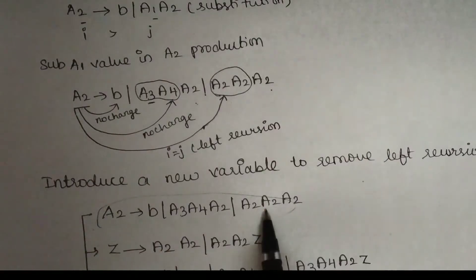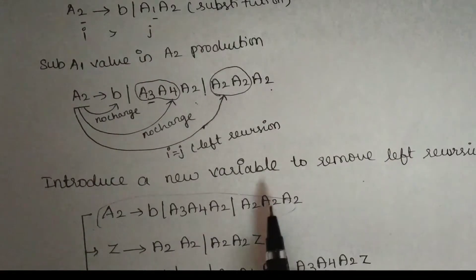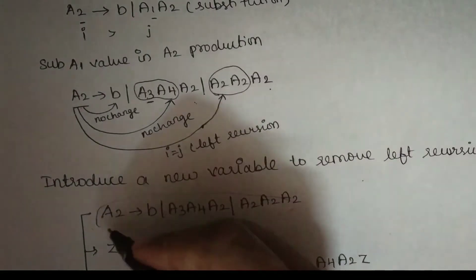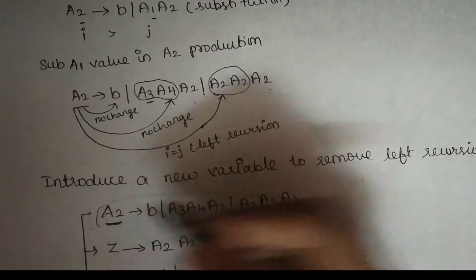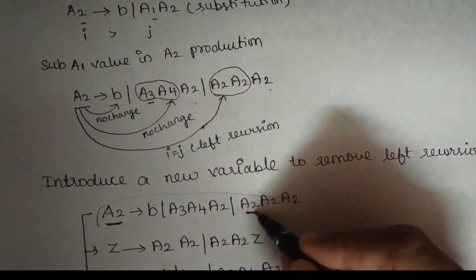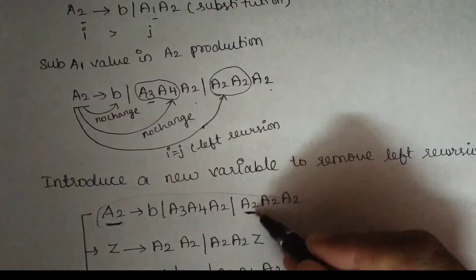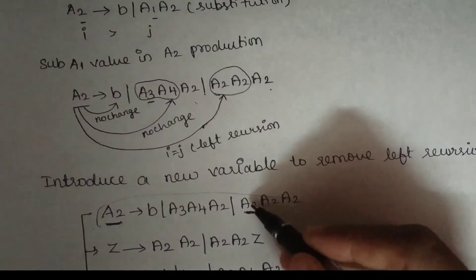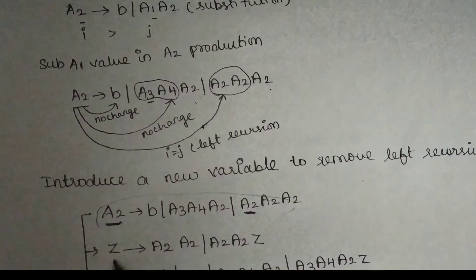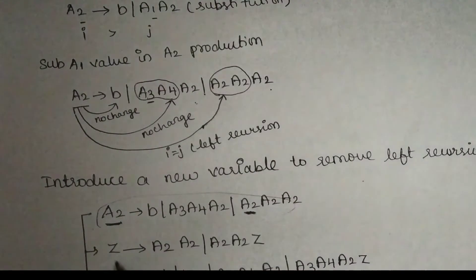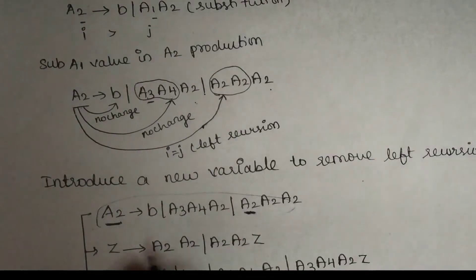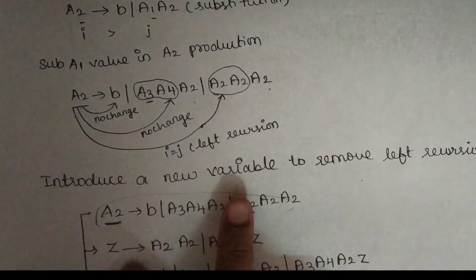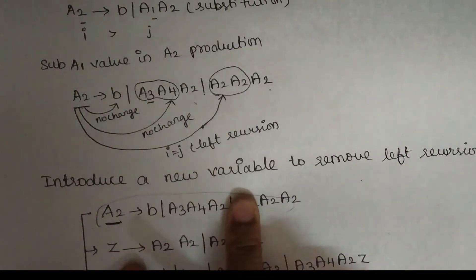In this production, here is A2. If you remove these productions, I will introduce Z. Then we will eliminate this A2 from the recursive production.